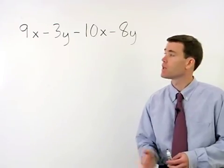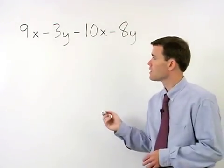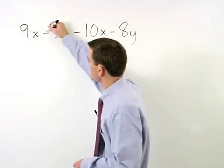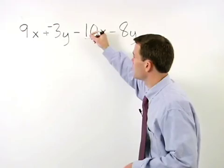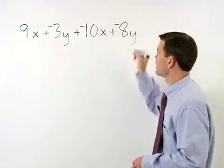As your first step to this problem, change all your minus signs to plus negatives. So we have 9x plus negative 3y plus negative 10x plus negative 8y.